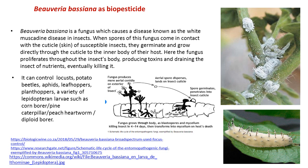It is due to Beauveria bassiana, where the spores produced by this fungus, once they come in contact with the cuticle of a susceptible insect, germinate. You can see the life cycle in the image: the spore, if it comes in contact with the cuticle or skin of an insect, germinates, penetrates inside the insect cuticle, and later enters into the inner body of the host. Inside, the fungi proliferates and grows throughout the insect's body.